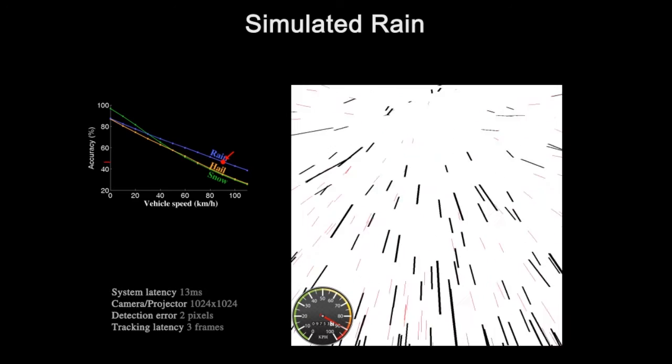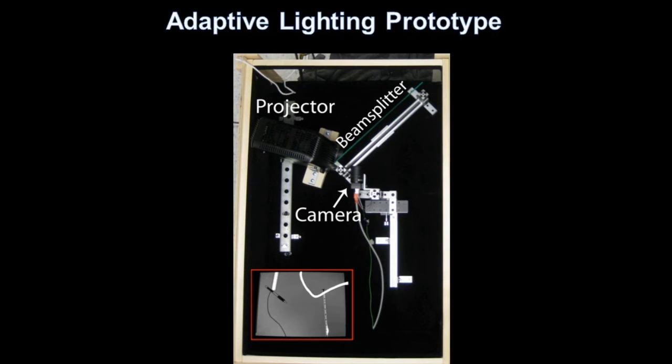We have also created a prototype camera projector system that detects drops and adaptively adjusts the illumination. The system consists of a co-located camera and projector, both running at 120 Hz. Based on the captured images, this prototype system adapts the projector lighting every 8 milliseconds.